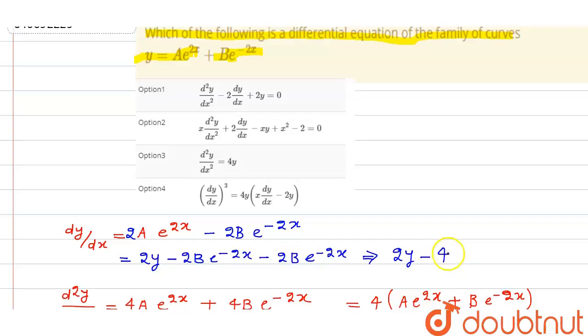It will be 4 e to the power minus 2x and there is b also. But okay, no problem, this is dy over dx.